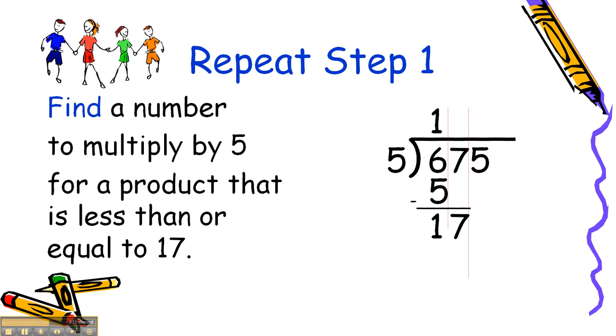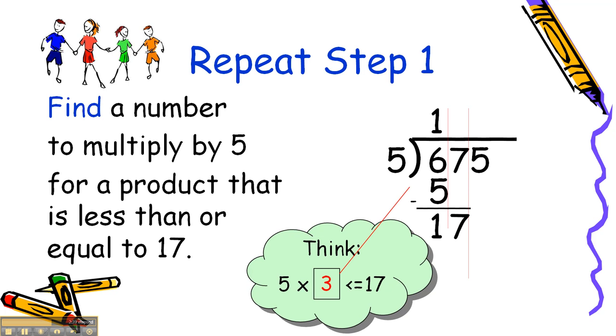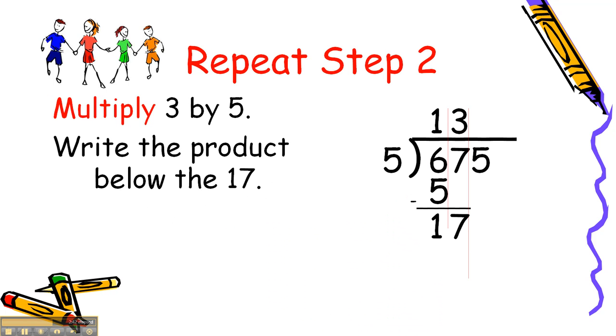In our mind again, we can think 5 times what number is less than or equal to 17? If you guessed 3, you're right. Let's put 3 up there in the quotient and go on to step 2. We're going to multiply.